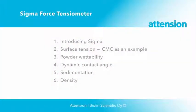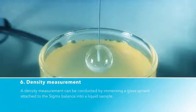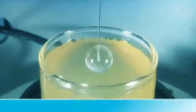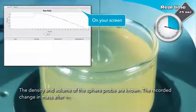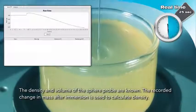And finally, a density measurement. A density measurement can be conducted by immersing a glass sphere attached to the sigma into the liquid sample. The density and volume of the sphere probe are known. The recorded change in mass after immersion is used to calculate density.